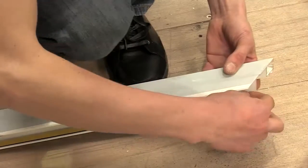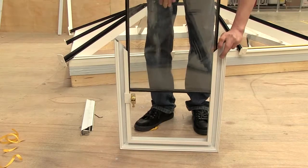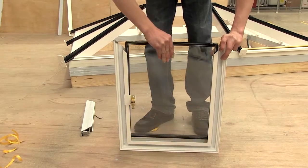Remove cover from the double sided tape. Slide glazing into roof vent sash and press down.